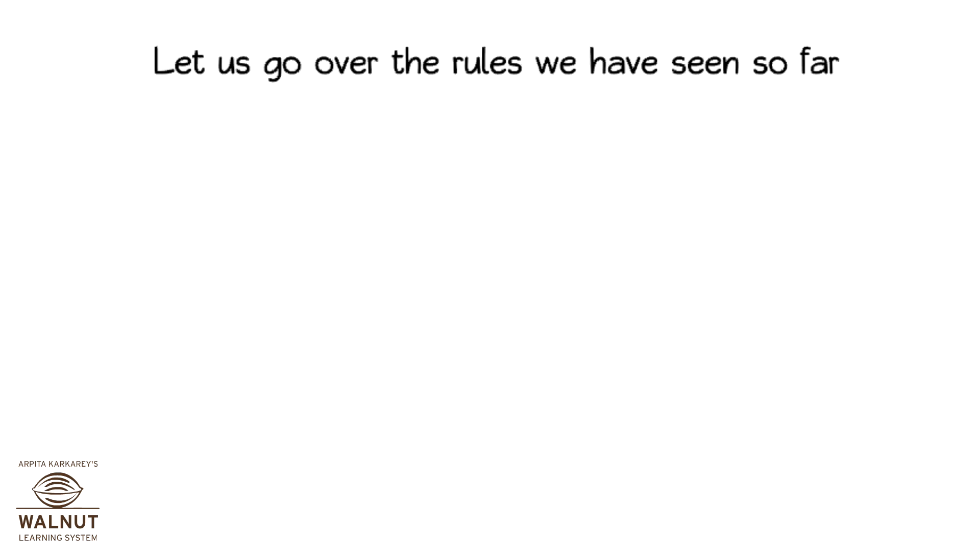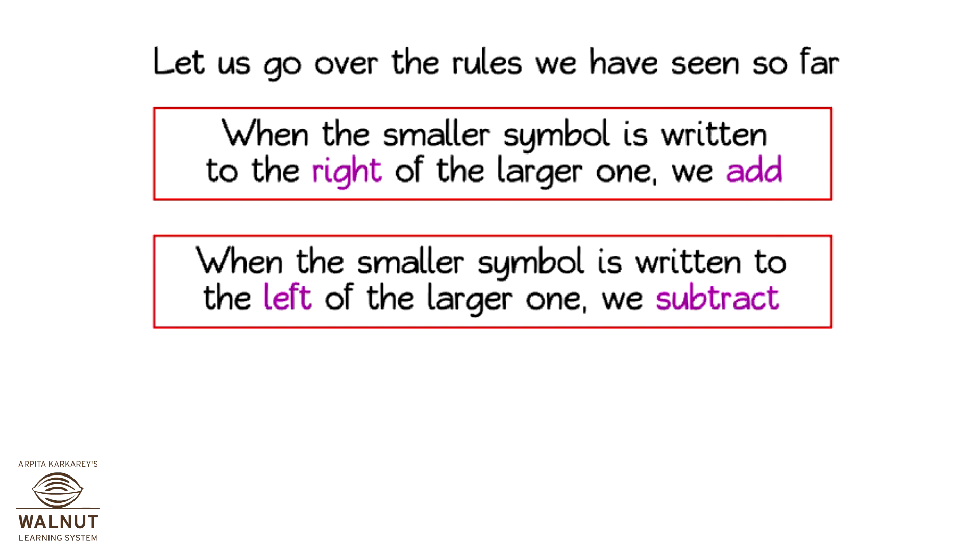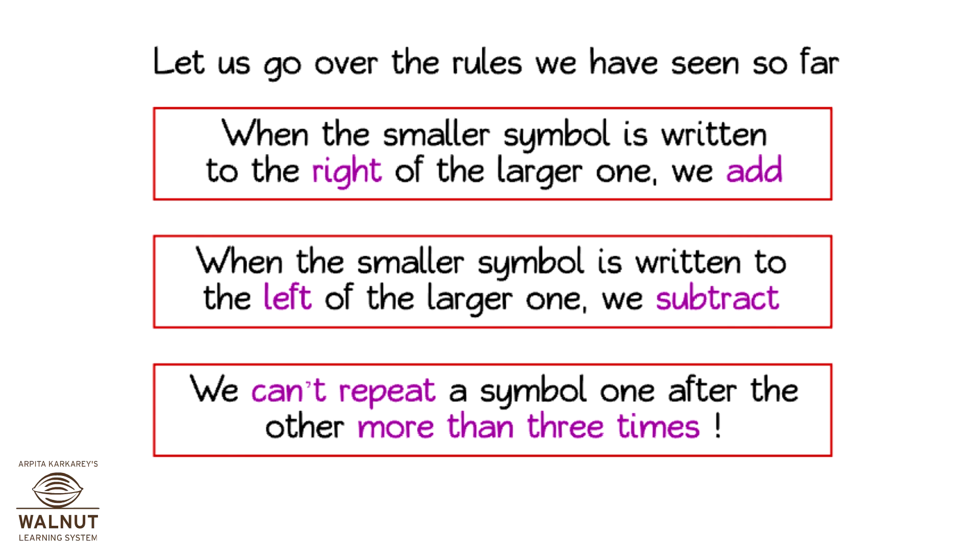Let us go over the rules we have seen so far. When the smaller symbol is written to the right of the larger one, we add. When the smaller symbol is written to the left of the larger one, we subtract. We can't repeat a symbol one after the other more than 3 times.